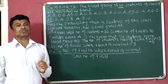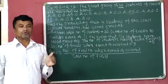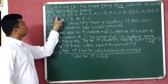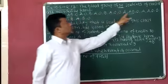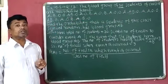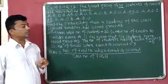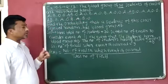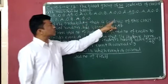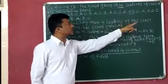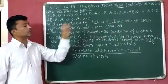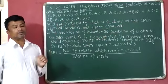In the given question, blood group of 30 students are given to us. These are the blood groups of the 30 students. Our question is: find the probability that a student of this class selected at random has blood group AB.